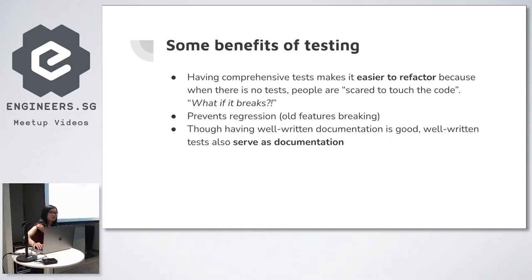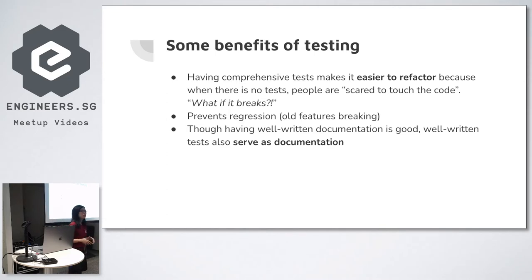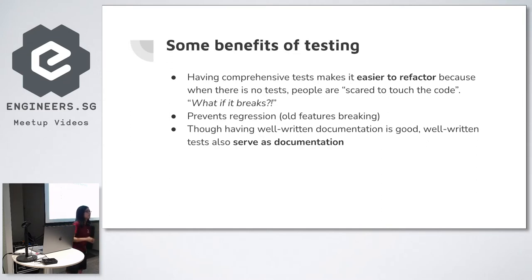Tests also serve as good documentation. A lot of people like to write long docstrings, but that kind of defeats the purpose of Agile. Tests really serve as documentation — as ThoughtWorks always says. With good tests, you know what important functions a script has. You don't test every function, just the important ones. You know the parameters it accepts and the expected output, which serves as an easier understanding of the code.